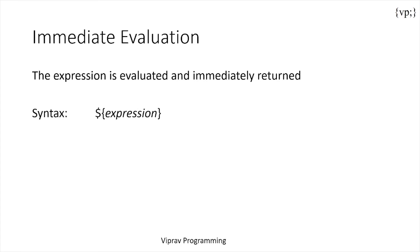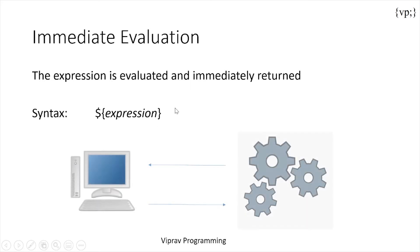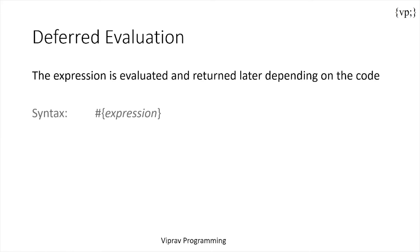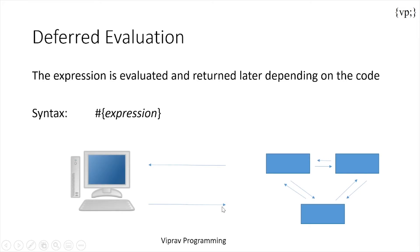Immediate evaluation is expressed by the dollar sign with an expression inside the curly brackets. This is like an immediate return of a request sent back by a response. Then there's deferred evaluation, which uses the hashtag sign, and this is held by your server for a little bit and then sent back after it's done computing.